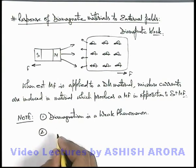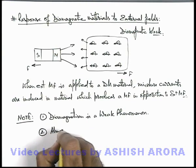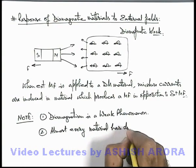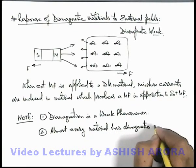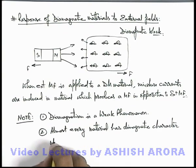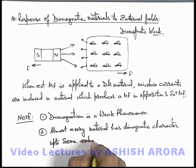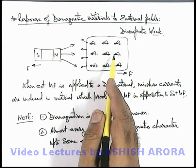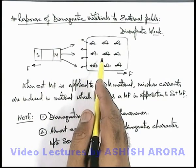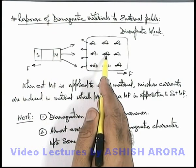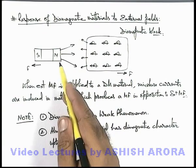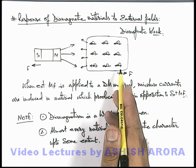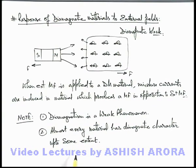The second point, which we have already written in the previous section: almost every material has diamagnetic character up to some extent. A diamagnetic material is the one in which the net dipole moment of every atom or molecule is zero, but even if some dipole moment exists, this phenomena will still be there, but it cannot dominate the existing dipole moment. That's why we can't see that other materials also repel. Diamagnetism is a weak phenomena so it cannot supersede or override other characters, but almost every material has diamagnetic character up to some extent.